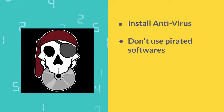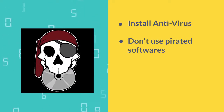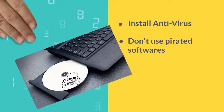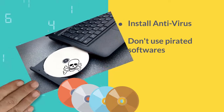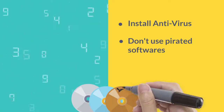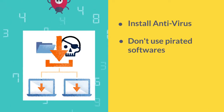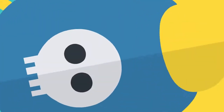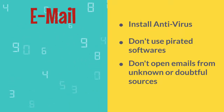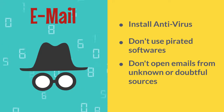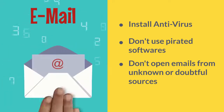Number two: avoid using pirated software. Pirated software refers to software which is sold without taking the owner's or company's permission. Usually these softwares are copied onto CDs or DVDs, and if the copying computer is infected with a virus, these pirated softwares would also bring the virus to the buyer's computer. Number three: avoid opening emails from unknown sources. Hackers send malware along with attachments, and opening such attachments might introduce a virus or spyware.